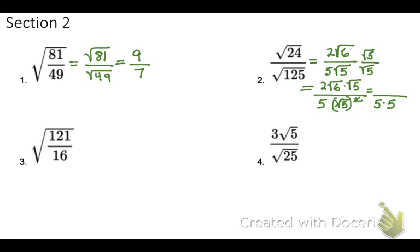I can combine the 6 and the 5, 2 times the square root of 30 over 25. And that's your answer.